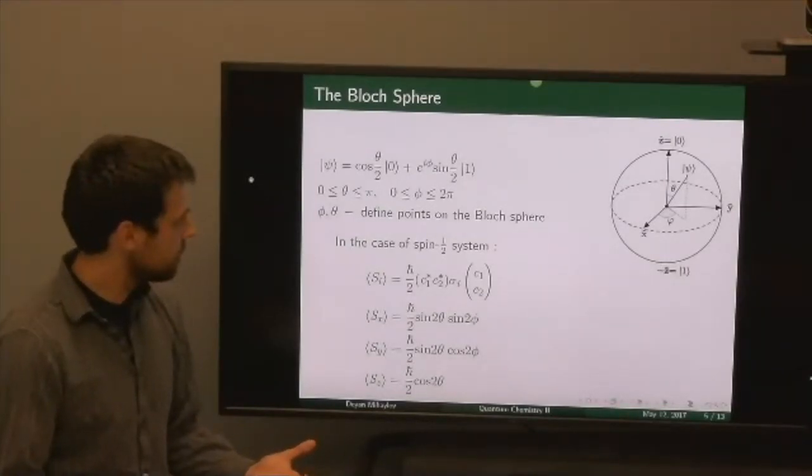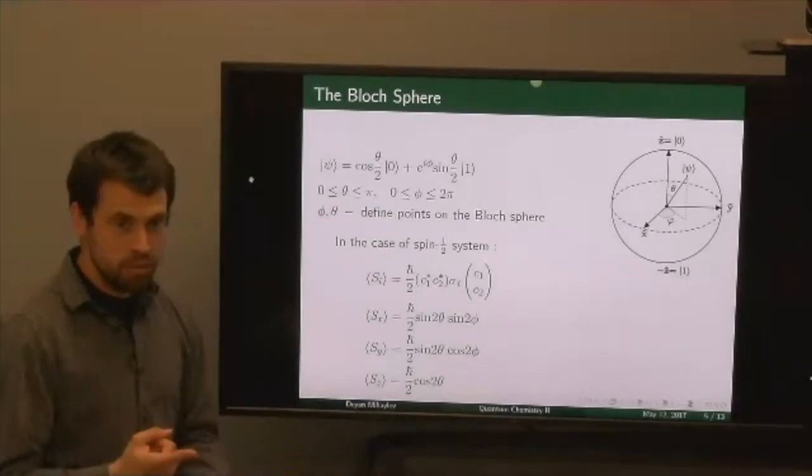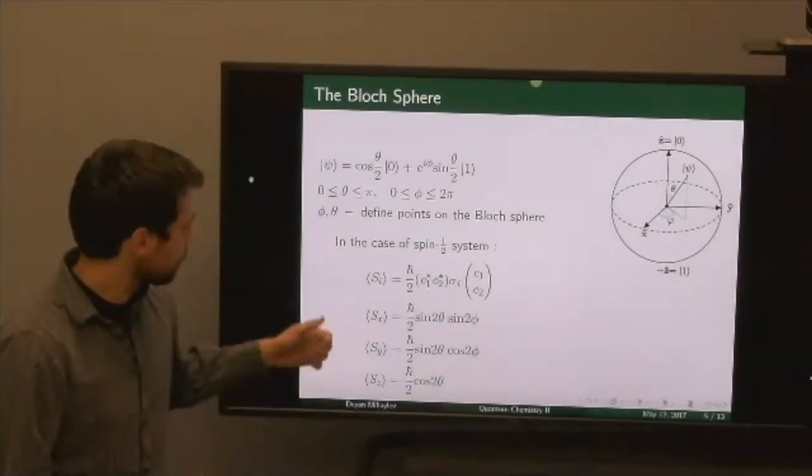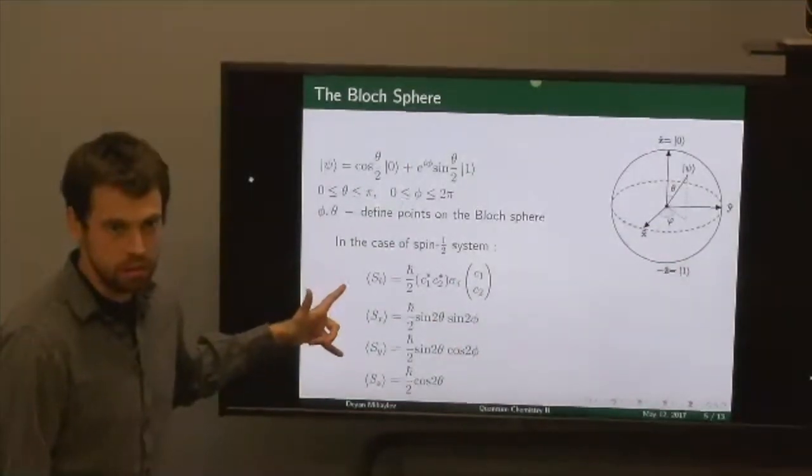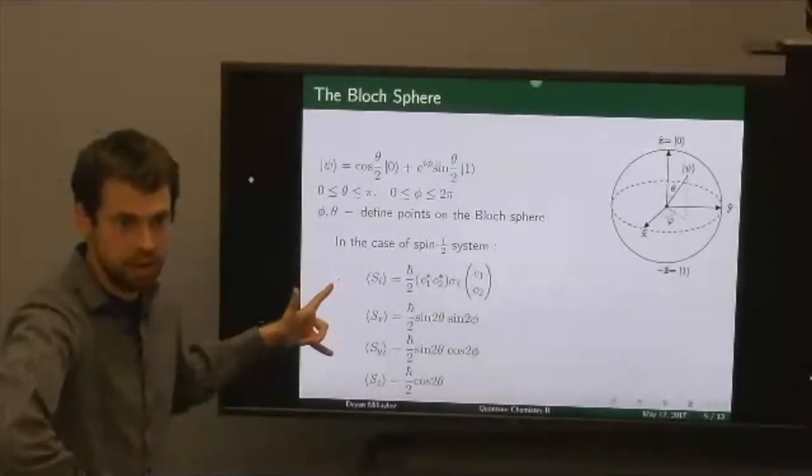When you have a two-level system, for example, the easiest way to explain it is in terms of spins. And we can have spin up and spin down.